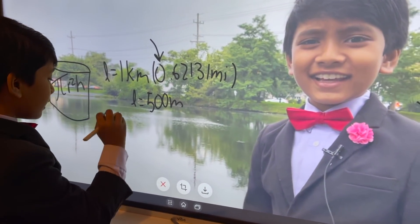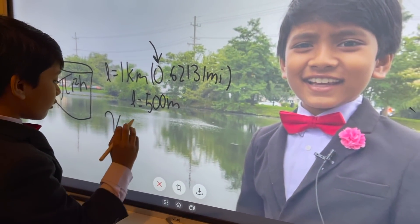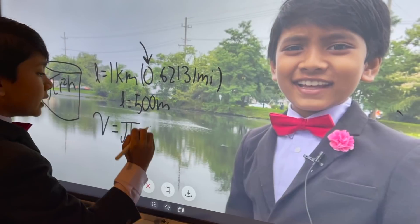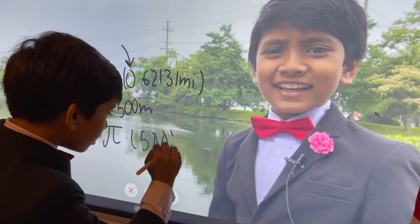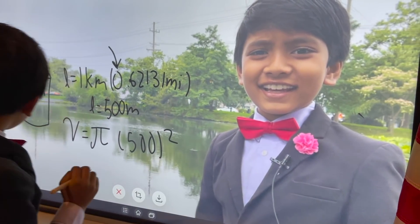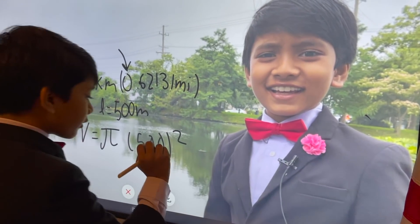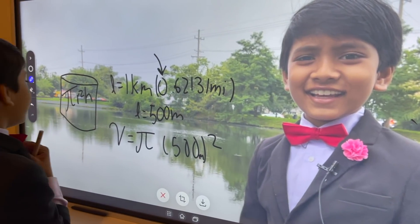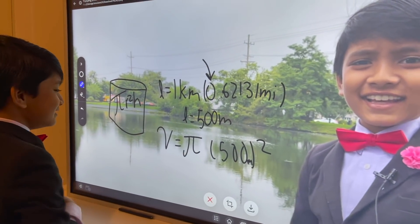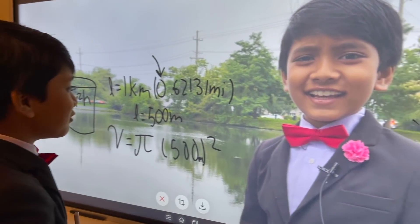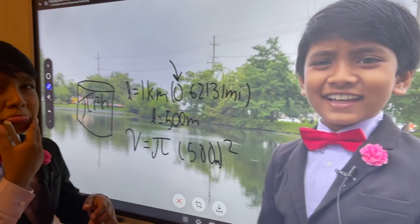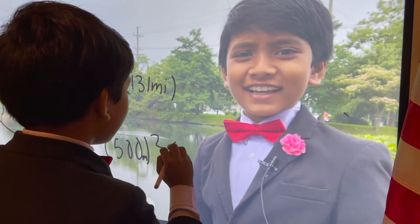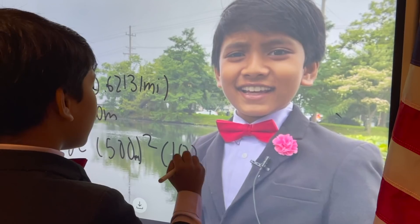Alright, let's write the equation for the volume. So, volume is pi times 500 meters squared, and then times H, and that would be — let's say that we have times 100.